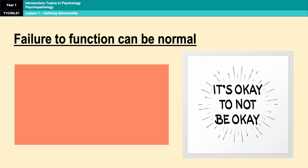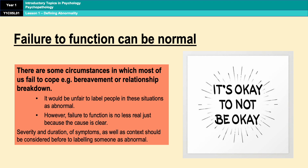On the other hand, as a limitation, we have to appreciate that not being able to cope with the demands of everyday life can be normal in certain circumstances. For example, if somebody has experienced a significant negative life event — such as a relationship breakdown or a bereavement — it would be completely understandable if they were experiencing some distress or not maintaining basic levels of nutrition or hygiene. The definition doesn't account for context. A small counterpoint is that failing to function due to an understandable situation doesn't take away from the fact that somebody may need help. However, it is very important to consider severity, duration of symptoms, and context before labelling somebody as abnormal — and that is what this definition fails to do.